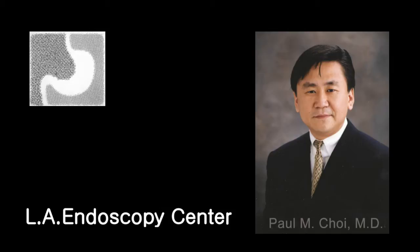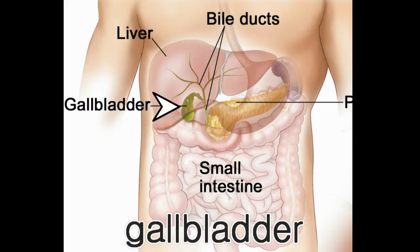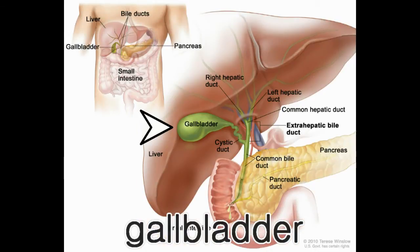In this presentation, I will be discussing gallstone disease. Gallbladder is a hollow pear-shaped organ that is located underneath the liver in the right upper abdomen. Bile that is produced in the liver is stored in the gallbladder. Upon ingestion of fatty food, this bile is released into the intestinal tract to facilitate the absorption of fat.